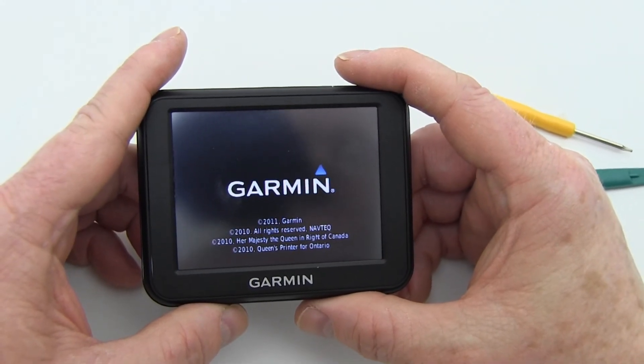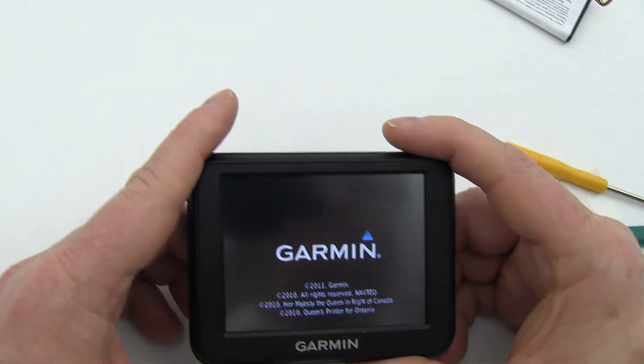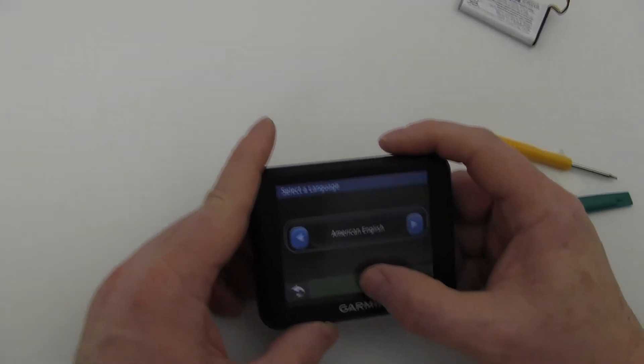Turn on your Garmin with its newly installed battery from NewPower99.com. Your Garmin should now work perfectly. Be sure to charge the device for at least two hours before continuing to use.